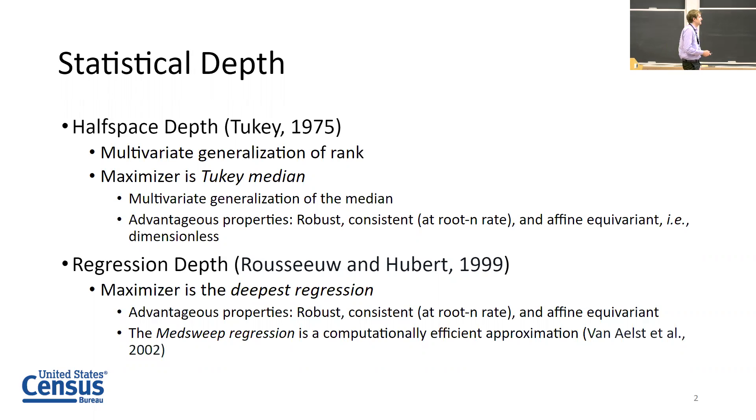Some advantageous properties: it's consistent at the usual parametric rate of root n and affine equivariant. Kelly mentioned this yesterday as well - basically another word for this is dimensionless. If you multiply each data point by two, the resulting Tukey median will be two times larger in every dimension.